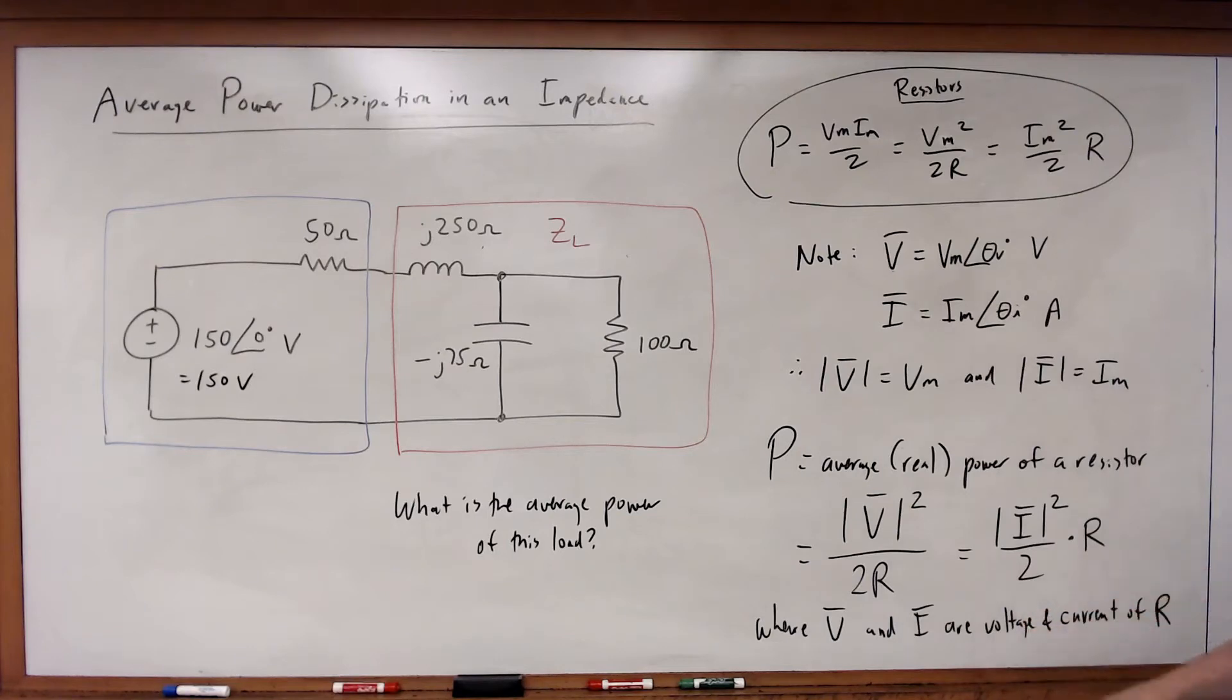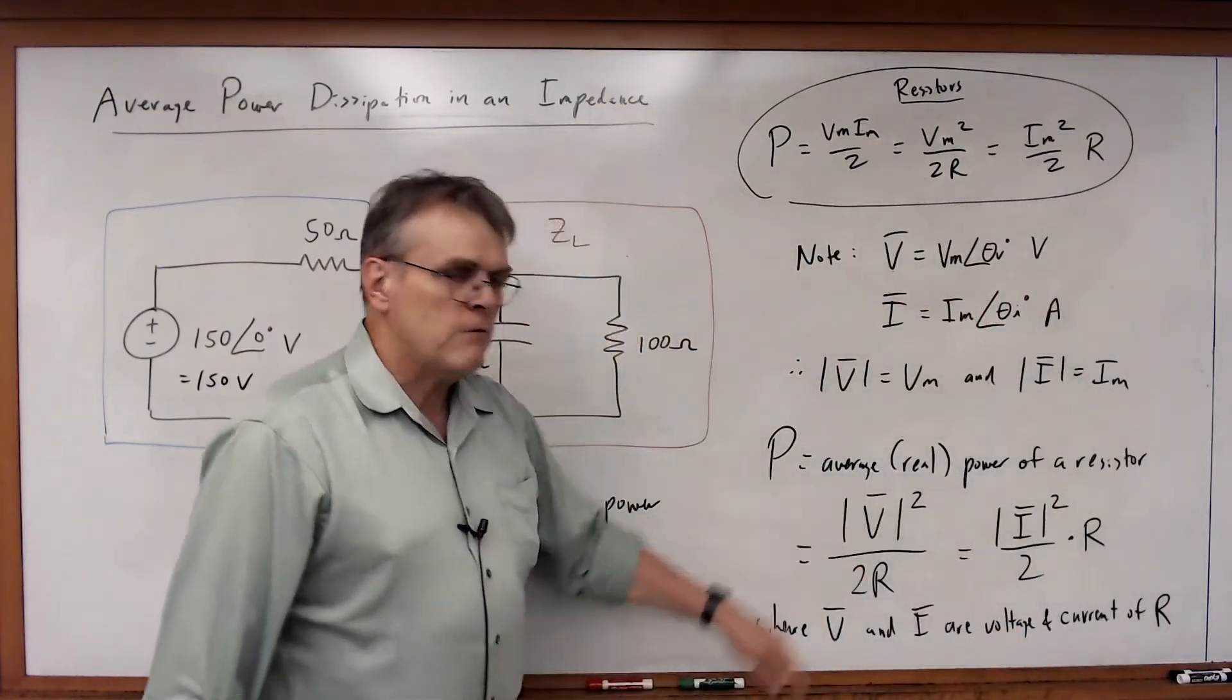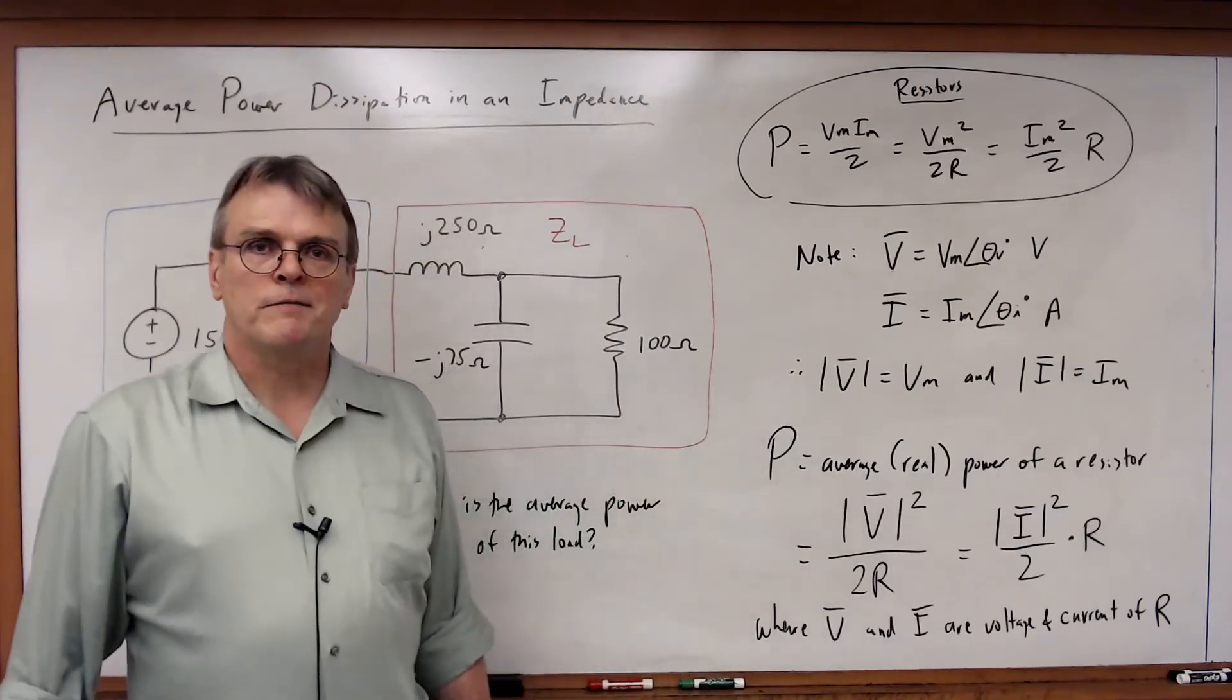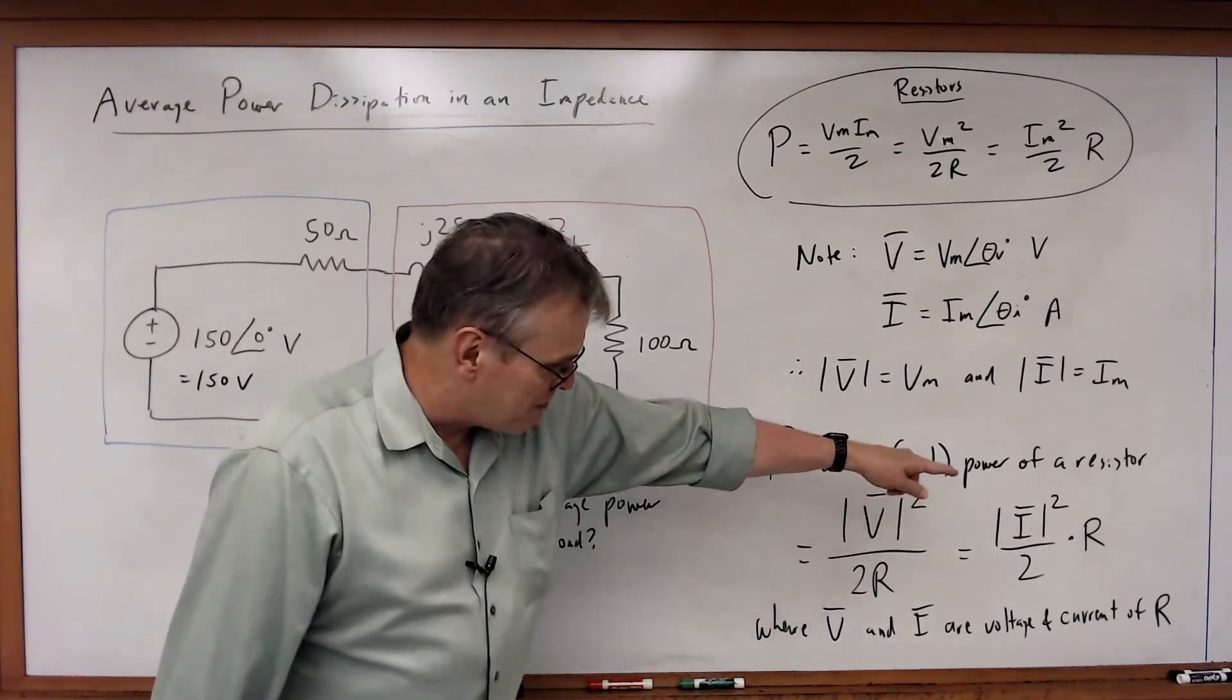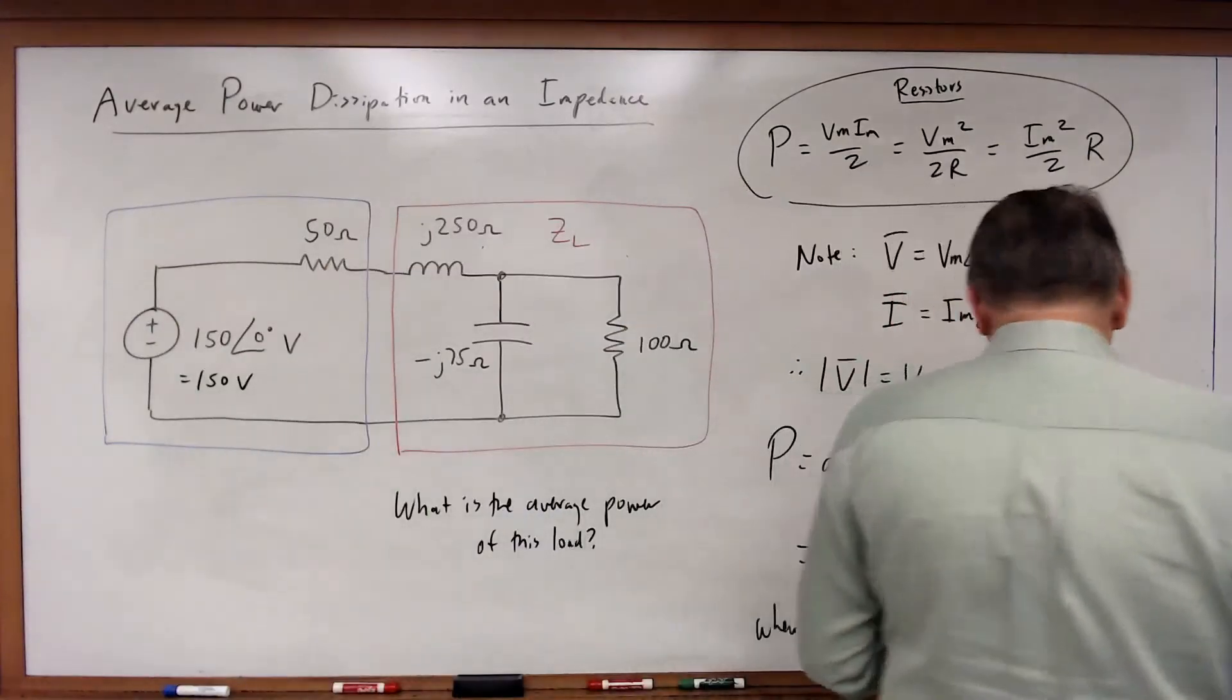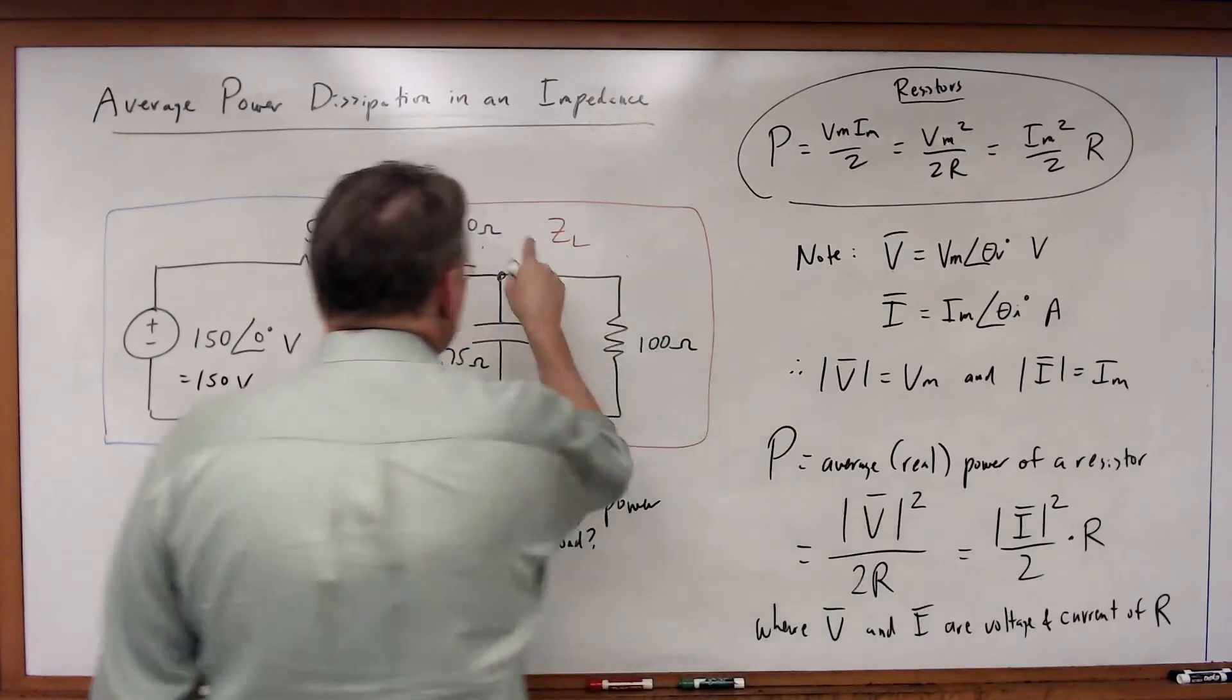So all we have to do in order to calculate the average power of a resistor is find the phasor voltage across it or the phasor current flowing through it, take the magnitude, square it, divide by 2, and then plug it into one of those two formulas. So given that, let's now calculate the average power of this load.